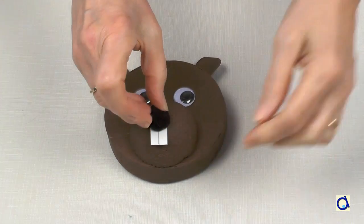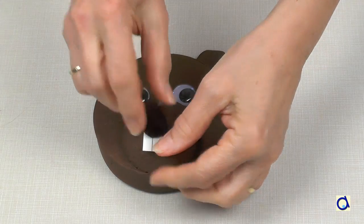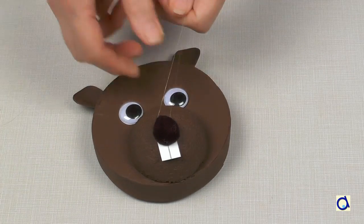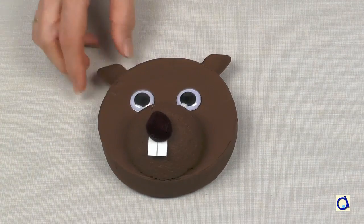Finally, glue the pom pom representing the nose with the glue gun. Keep the bottom part of the teeth visible below the pom pom.